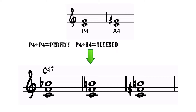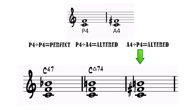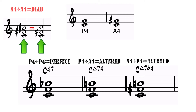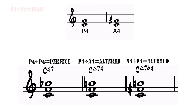A perfect fourth plus an augmented fourth equals an altered quartal: C, F, and B natural — notated as C major7,4. An augmented fourth plus another augmented fourth gives us C, F#, and C again — which does not give us three different notes, but rather two. This is not a quartal; it is merely a dyad. So we only have three kinds of quartals: the perfect quartal (4,7), the altered quartal (major7,4), and the altered quartal (major7,#4).